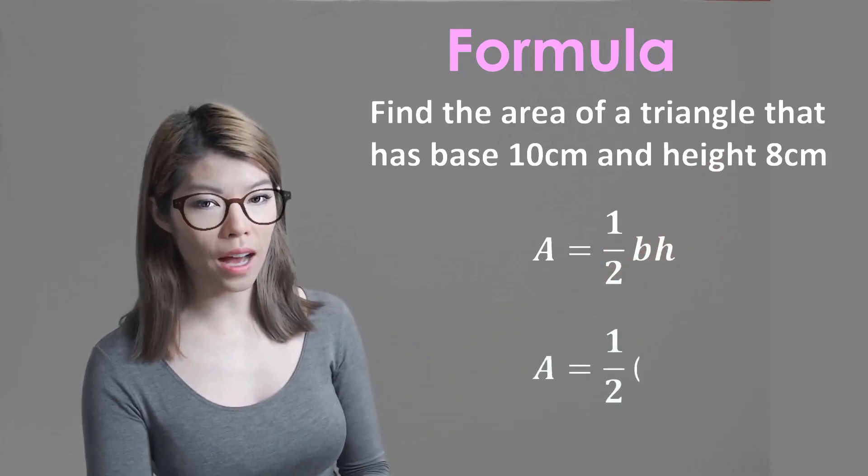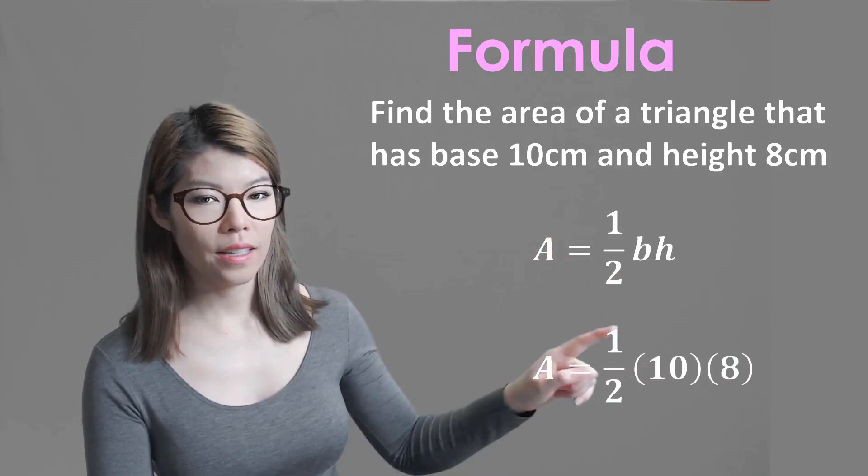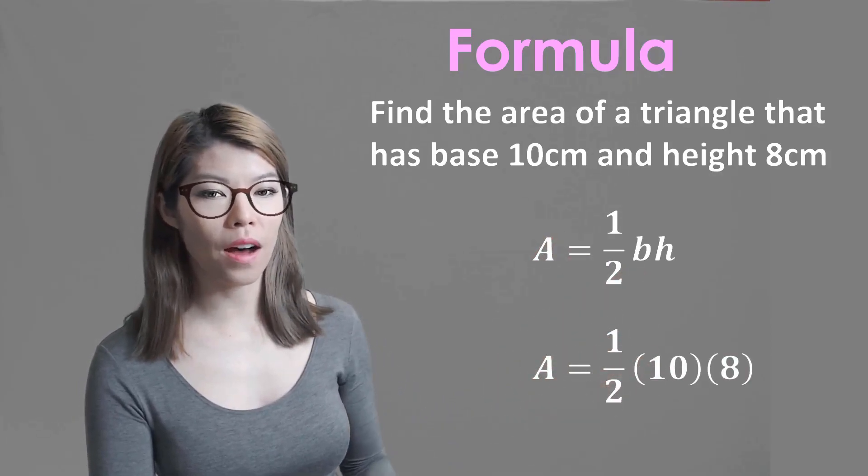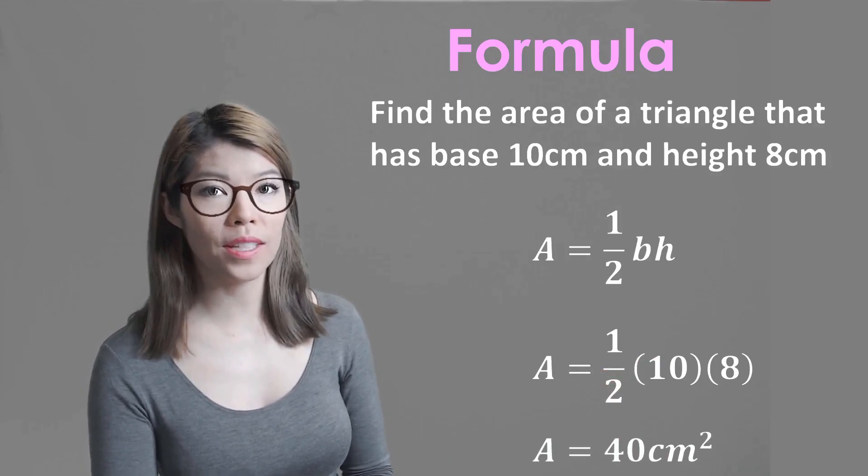So we have A equals half, and then b is the 10 and then the height is the 8. Now half times 10 is 5, and then 5 times 8 is 40. So it's 40 centimeters squared.